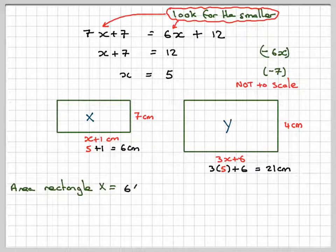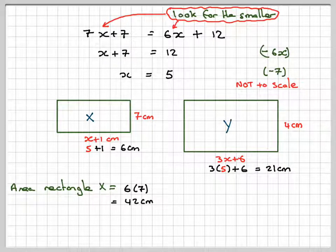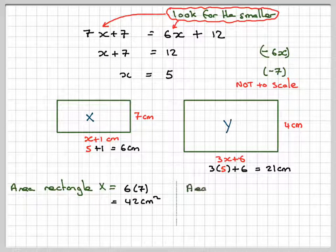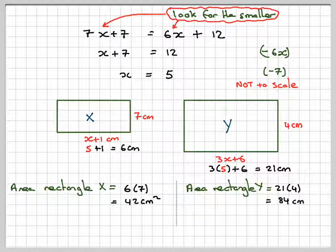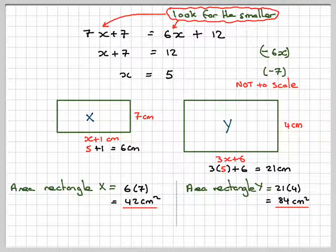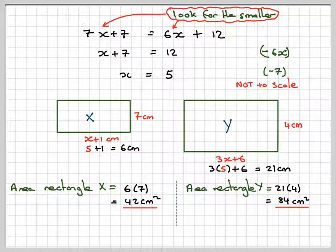Therefore the area of Rectangle X is 6 times 7 which is 42cm squared. And the area of Rectangle Y is going to be 21 times 4 which is 84cm squared.